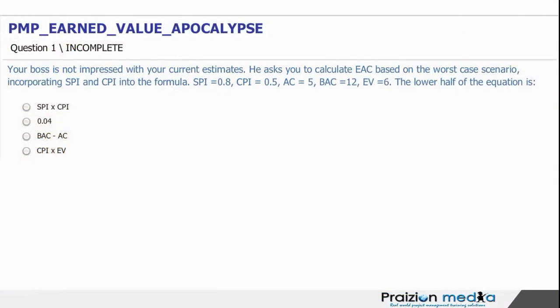Let's take a look here and see. We have a question from our earned value apocalypse. Now, spoiler alert. If you intend doing that quiz, don't look at the next few slides because they will tell you the answers. So it's better to look at the next few slides after you've done the quiz. All right? All right. Your boss is not impressed with your current estimates. He asks you to calculate EAC based on the worst case scenario incorporating SPI and CPI into the formula. SPI is equal to 0.8. CPI is equal to 0.5. AC is equal to 5. BAC is equal to 12. EV is equal to 6.